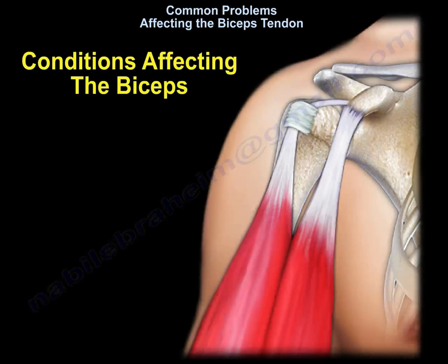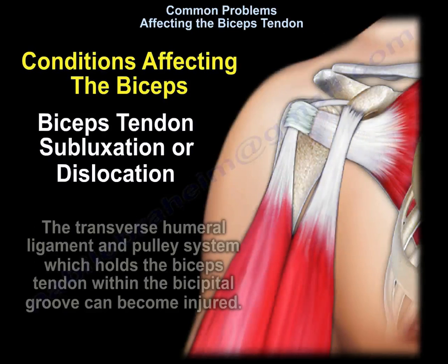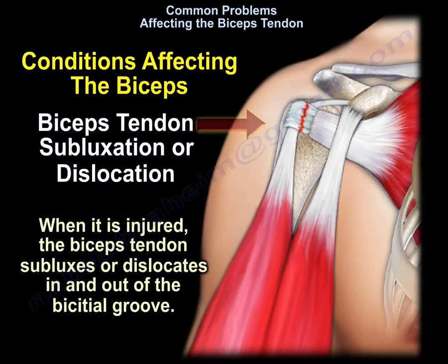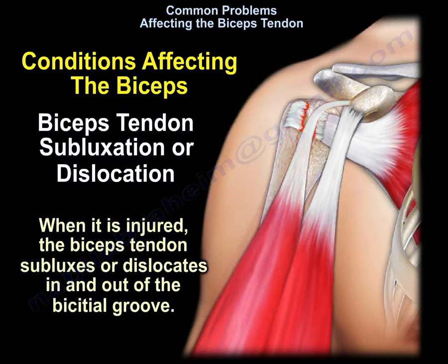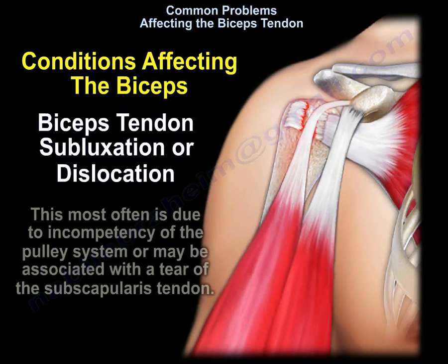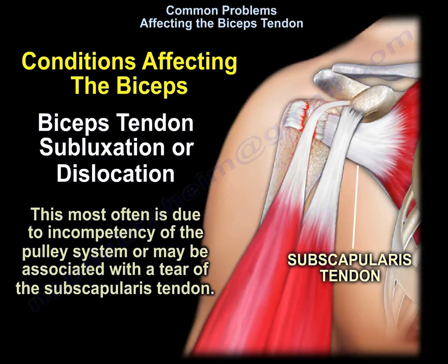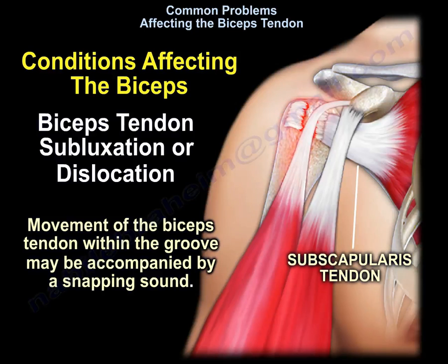Biceps tendon subluxation or dislocation: the transverse humeral ligament and pulley system, which holds the biceps tendon within the bicipital groove, can become injured. When injured, the biceps tendon subluxes or dislocates in and out of the bicipital groove. This most often is due to incompetency of the pulley system or may be associated with a tear of the subscapularis tendon. Movement of the biceps tendon within the groove may be accompanied by a snapping sound.